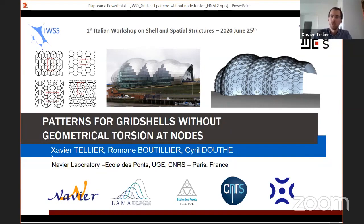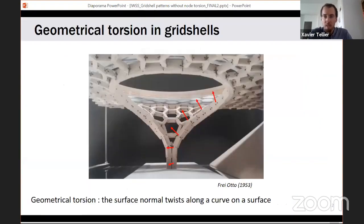The ones that allow to deal efficiently with geometrical torsion. What I mean by geometrical torsion is the fact that as you're trying to make a beam follow a curved surface, the normal vector of the surface undergoes twisting along this line. This is the cause of many fabrication issues that make the fabrication of grid shells quite complex.